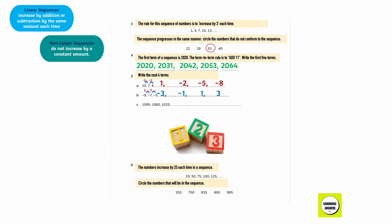For the sequence 1,095, 1,060, 1,025: the difference between 1,060 and 1,095 is negative 35, and the difference between 1,025 and 1,060 is again negative 35. So we subtract 35 from 1,025 to get 990, then 990 minus 35 is 955, 955 minus 35 is 920, and 920 minus 35 is 885.